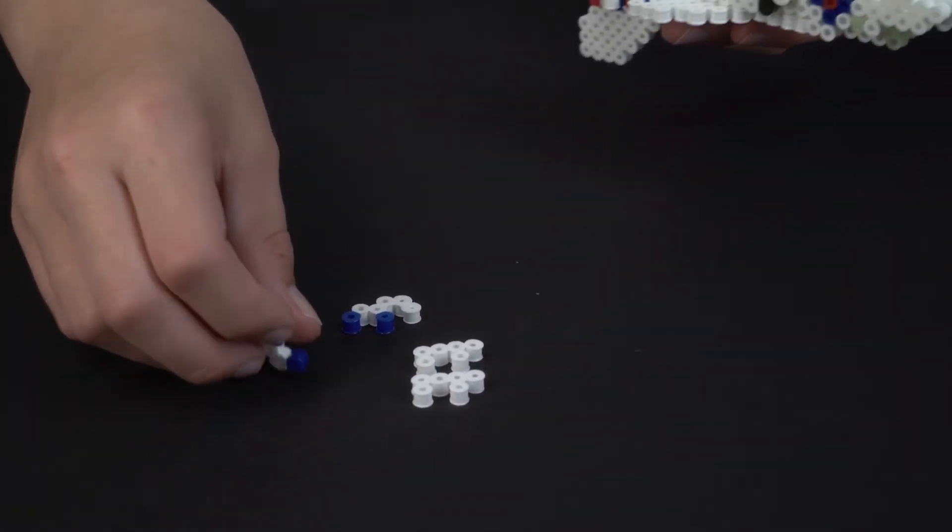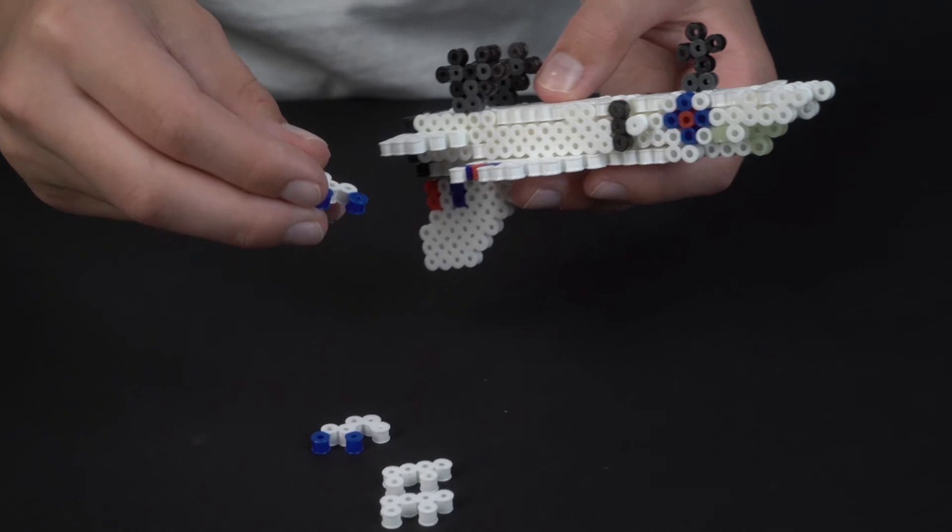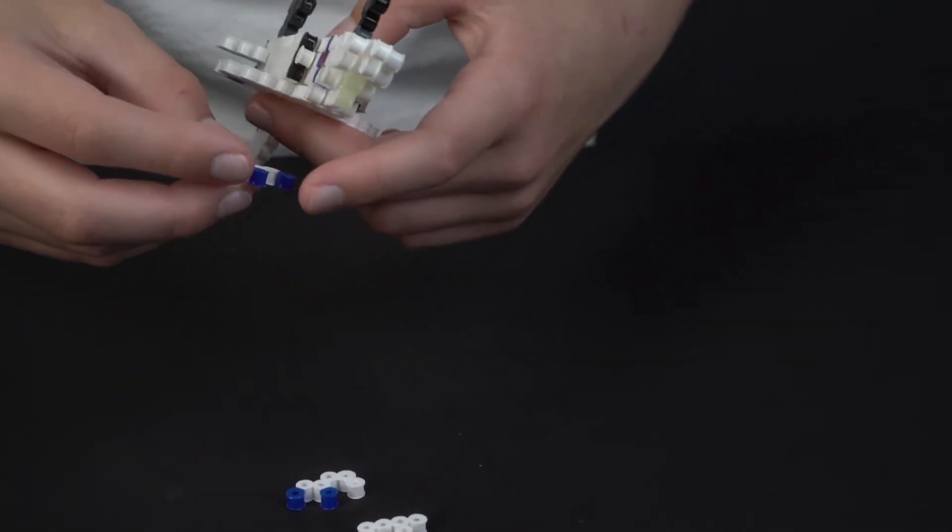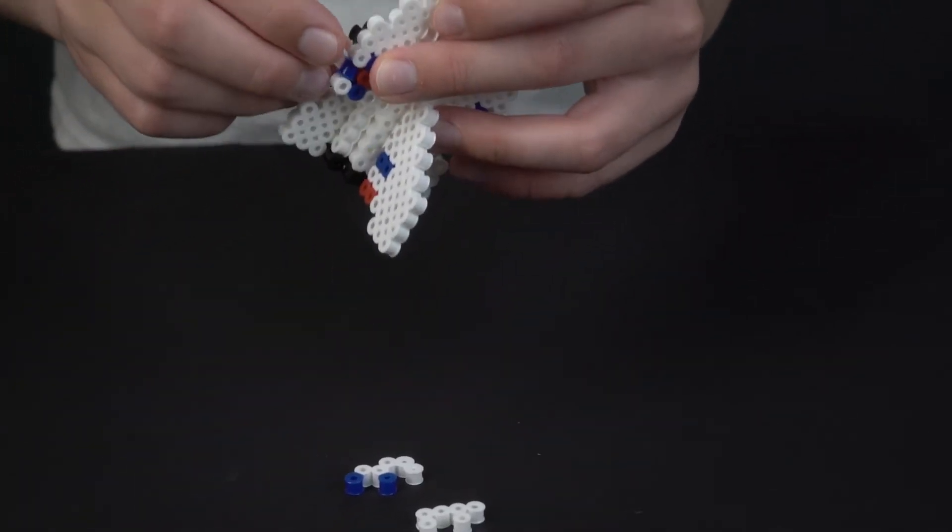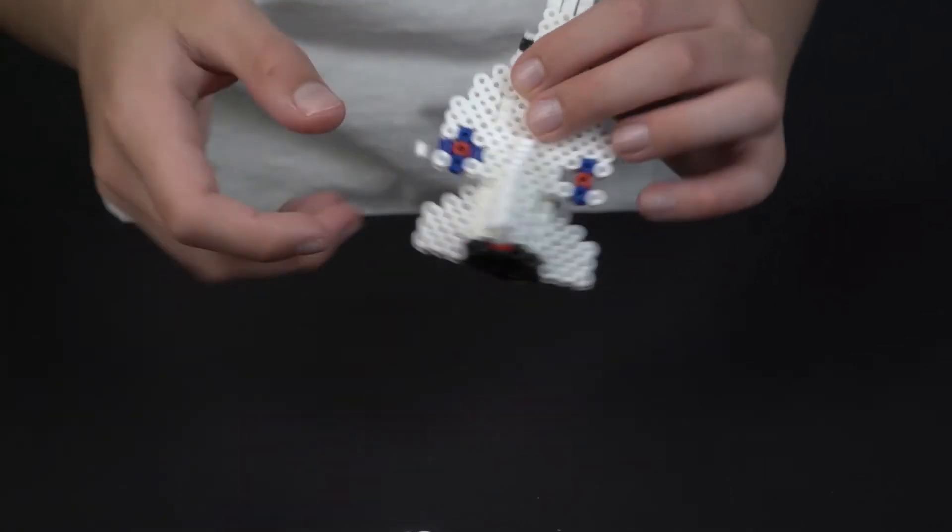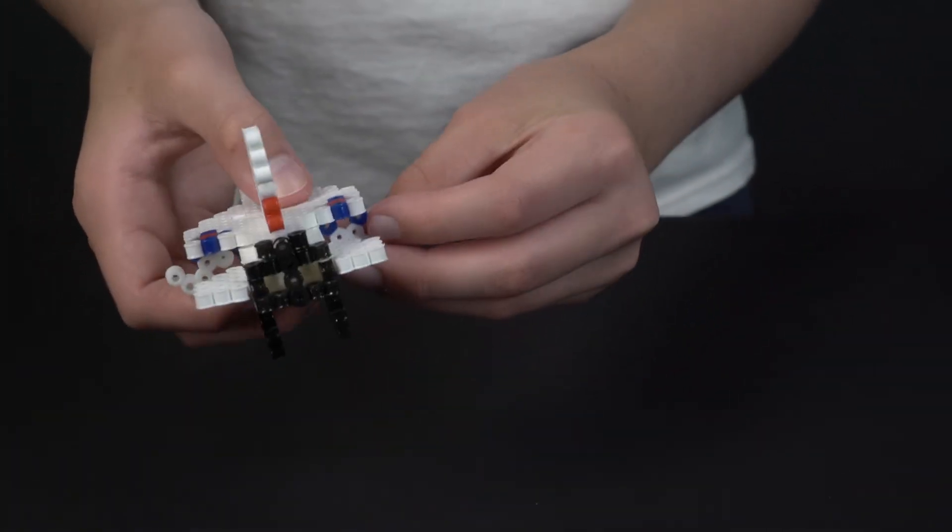So we take one of the octagonal pieces and we stick it in so that the blue beads are sticking through the top like so. And then we repeat the process on the other side.